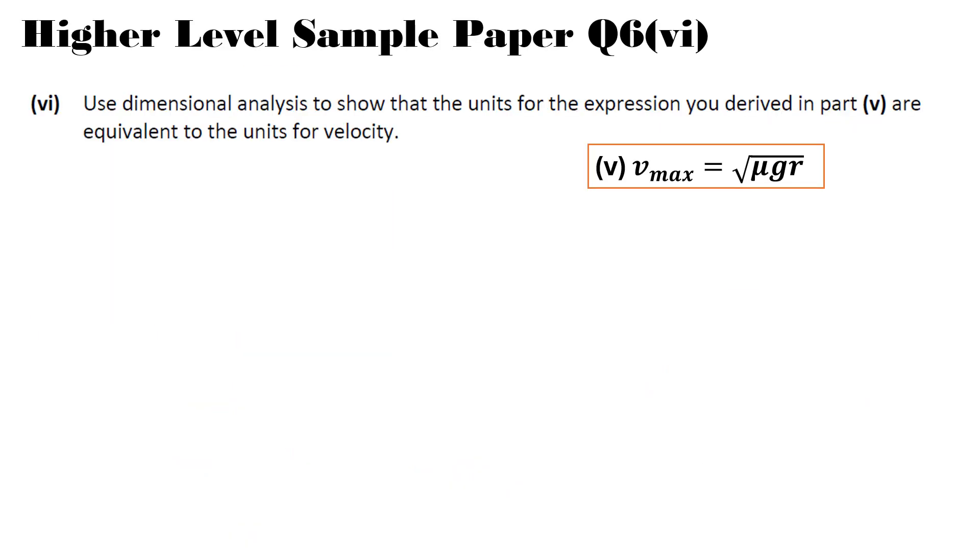So the last example in this video is coming from our sample paper. It is question six part VI and it is thrown into the middle of a question. And it says use dimensional analysis. Show the unit for the expression you derived in part five, which I've given to you in the orange box, are equivalent to the units of velocity. So we're trying to prove that this is going to give us meters per second. So the formula was the velocity max is equal to the square root of mu G R. And what we want to do, there's one thing here we haven't seen yet. So let's fill in what we know.